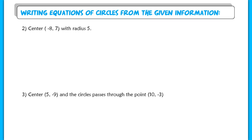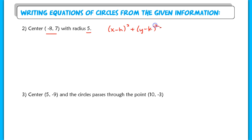Our second objective is to write an equation of a circle given specific information. The first example is straightforward — it tells you the center and the radius. You plug into the equation: (x minus h) squared plus (y minus k) squared equals r squared. The hard part is memorizing the equation, which is a derivation of the distance formula.